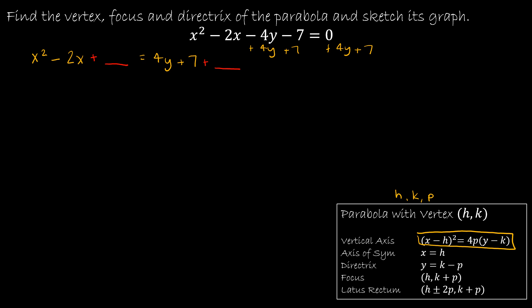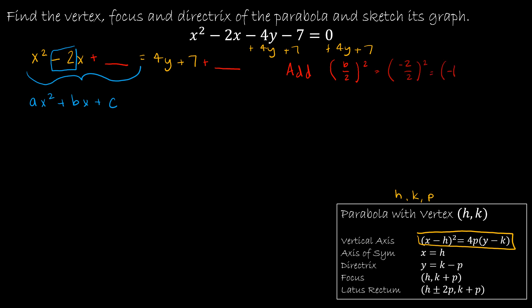You should have already learned how to complete the square, but you may have forgotten. To complete the square, every single time we add to each side (B divided by 2) quantity squared. B comes from the quadratic form ax² + bx + c. So I'm finding C by taking B, dividing by 2, and squaring it. That gives me (−2/2)², which is (−1)², which is positive 1. That value is going to be very important — remember what value you squared. So I add 1 to each side.